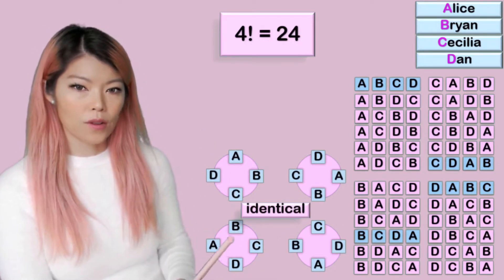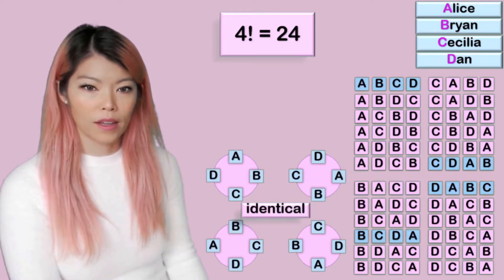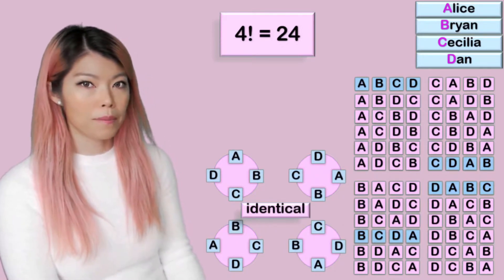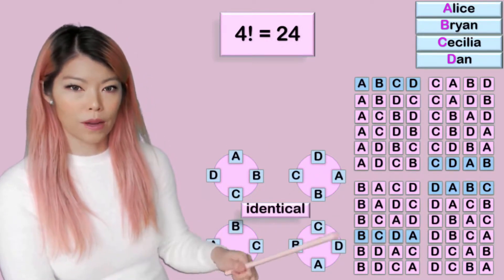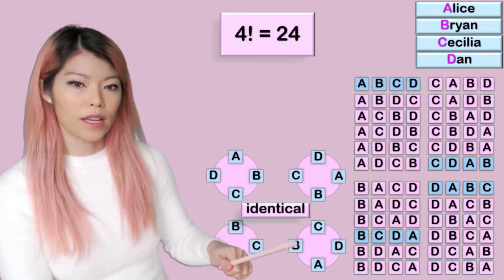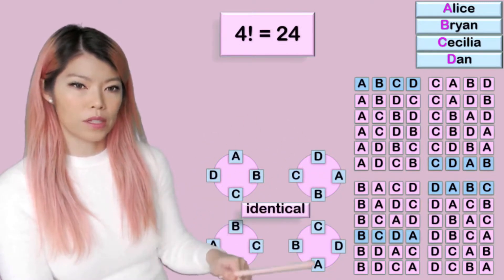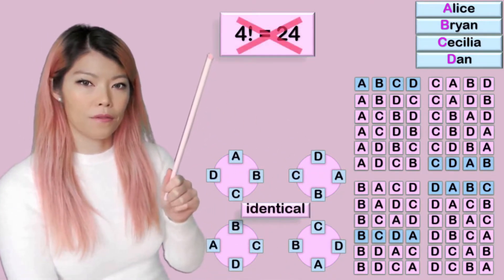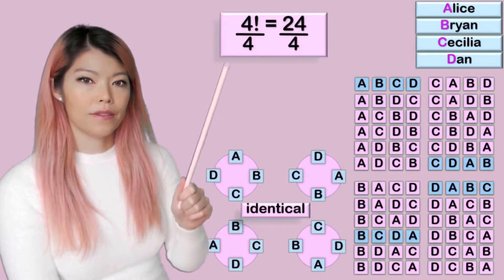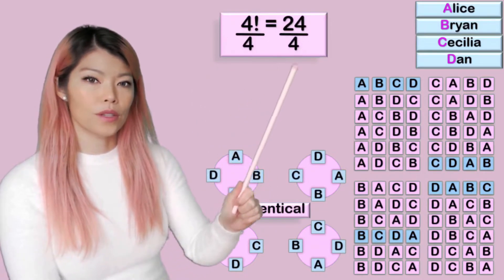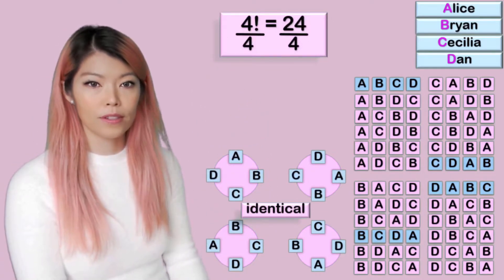So how do I make these four become one? I would divide by four. Four divided by four is one. So if I want to get rid of these repetitions, I would divide by four, and dividing by four gives me 24 divided by four, which is six.